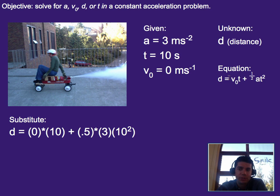So we plug into the equation d equals v-naught t plus one-half at squared. I'm substituting. I'm putting in zero for the beginning speed, ten for the time, .5 as one-half, three for the acceleration, and ten squared for time squared.